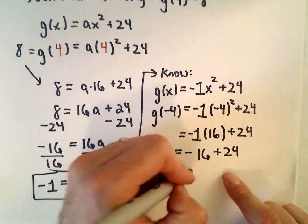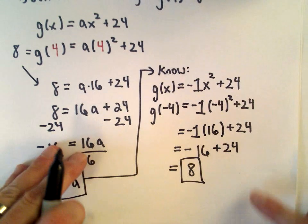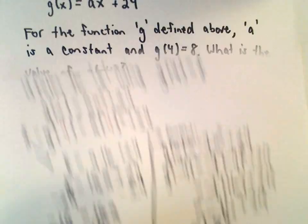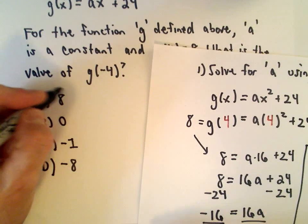Well, -16 plus 24 will give us our value of 8, and that will be our solution. So g(-4) should equal positive 8.